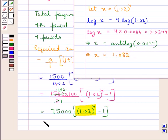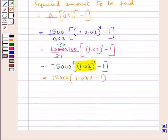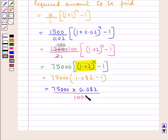Here we have 75000 × (1.082 - 1). Further, we get 75000 × 0.082. Now removing this decimal, we have 1000 in the denominator. These three zeros cancel with these three zeros, and we have 75 × 82 which is equal to 6150.